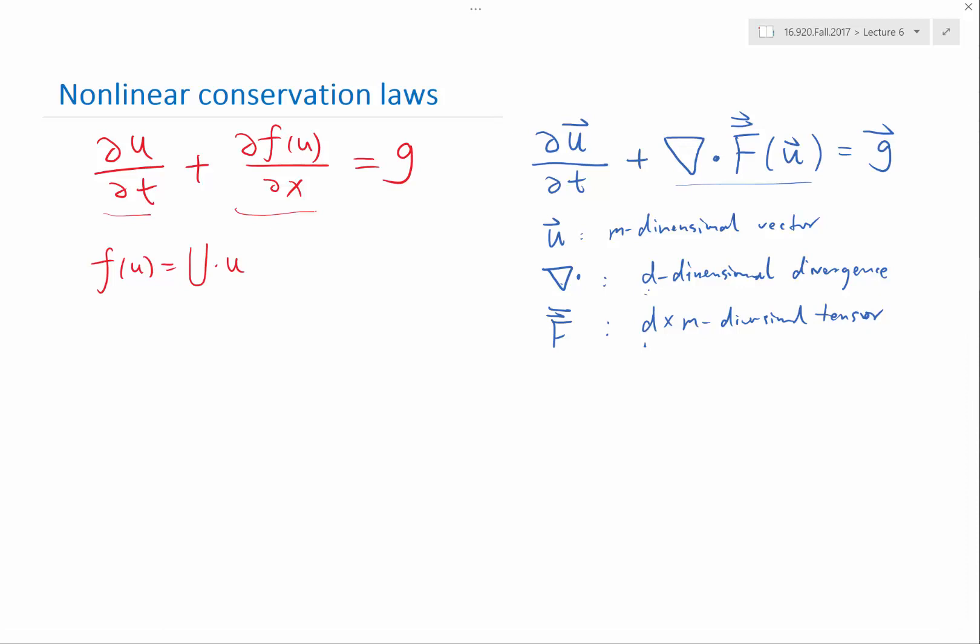It's the linear advection equation. We already know the behavior. The behavior is the solution gets shifted without changing towards the left or towards the right depending on the sign of U.